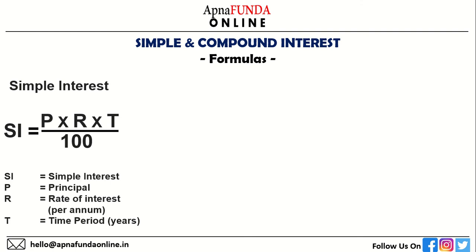Where SI means simple interest, P stands for principal, R stands for rate of interest per annum, and T stands for the time period in years. From this simple formula of simple interest you can also derive formulas to find the principal, rate of interest, and the time. Let's look at those formulas as well.